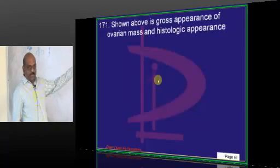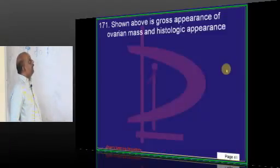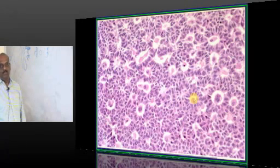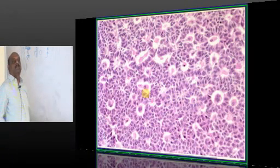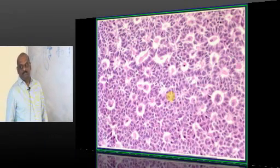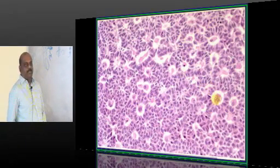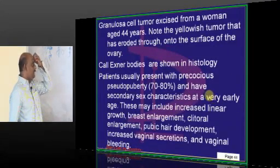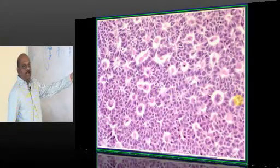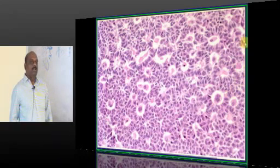Now, in this question, we are showing you the gross appearance of an ovarian mass. Ovarian mass and its histology has been presented to you. What is the histological hallmark which you are seeing in this tumor? Anything that is very striking for you to call it as granulosa cell tumor? Call-Exner bodies, these are called Call-Exner bodies which are the feature in case of granulosa cell tumor.